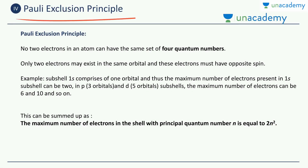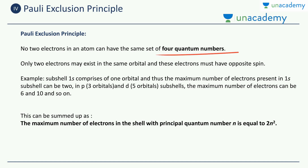Now we have the Pauli exclusion principle. It says no two electrons in an atom can have the same set of four quantum numbers. We have studied the four quantum numbers, and each and every electron needs to have its own unique set of four quantum numbers. It is like an address code, and a single address can be occupied by only one electron.